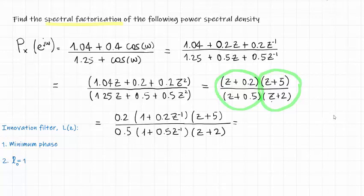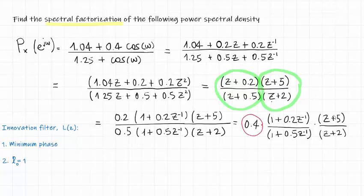Which leads us to the final solution of the problem. Because writing the system as such, we can see all the parts of the spectral factorization. We see that 0.4 is the variance of the input noise. That this part is our innovation filter, which is causal, stable and minimum phase. And this part is L of Z to the power of minus 1.